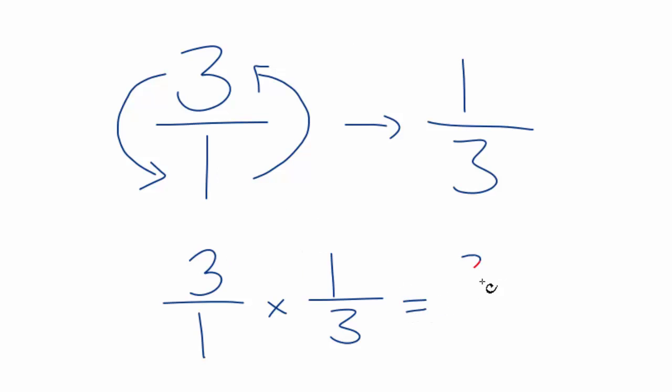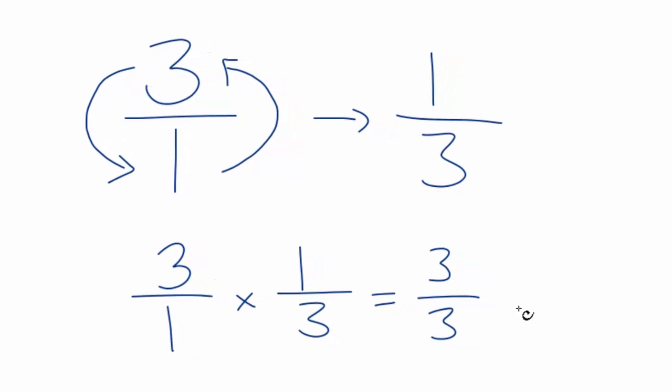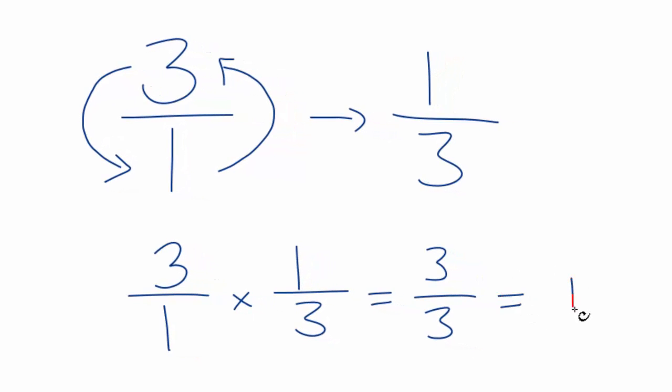3 times 1 is 3. 1 times 3 is 3. 3 divided by 3 equals 1. So we did this correctly. The reciprocal for 3, the number 3, is 1 third.